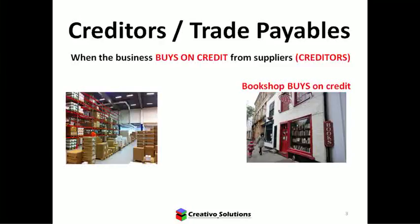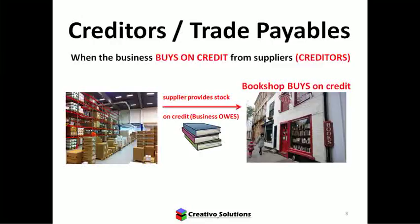When a business buys on credit from suppliers, we consider the supplier a creditor. Why? Because buying on credit creates an obligation to pay. The supplier provides books today, and the business then owes the supplier and must pay in the future — giving rise to a future outflow of economic benefit. That meets the definition of a liability. A liability is an obligation that gives rise to a future outflow of economic benefit.